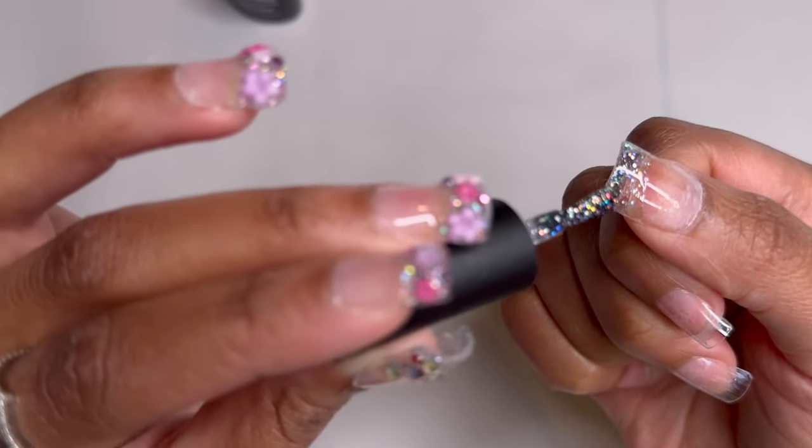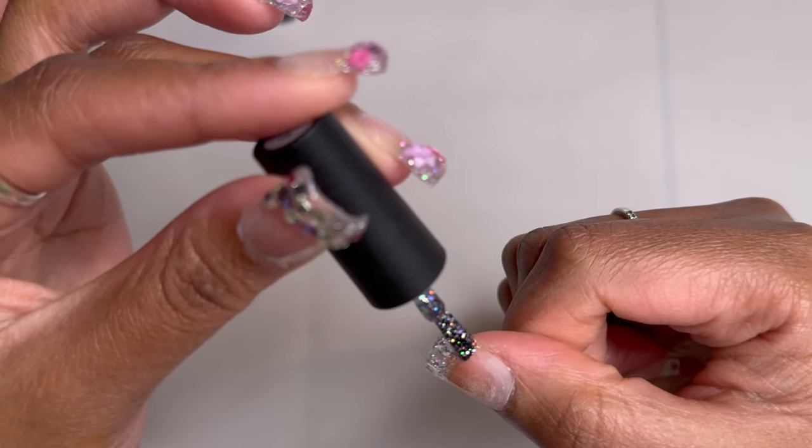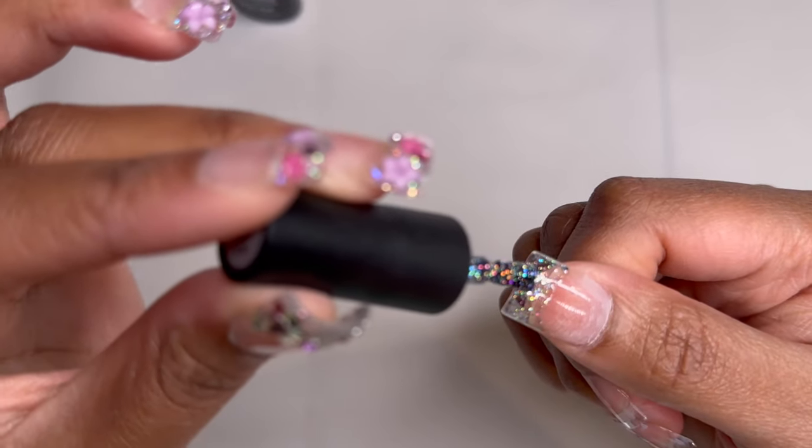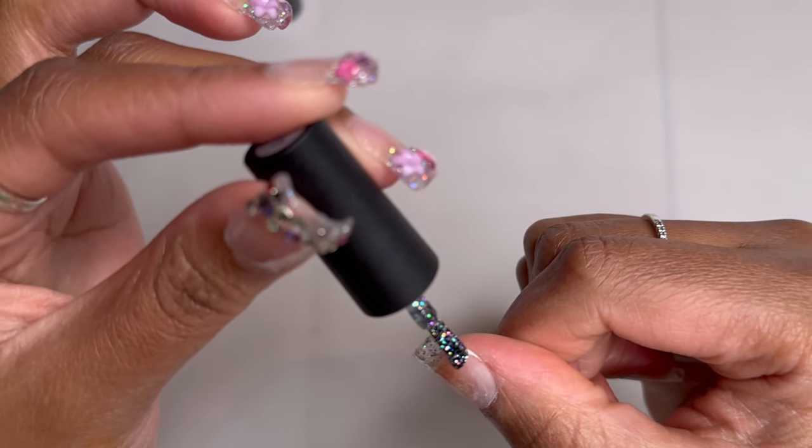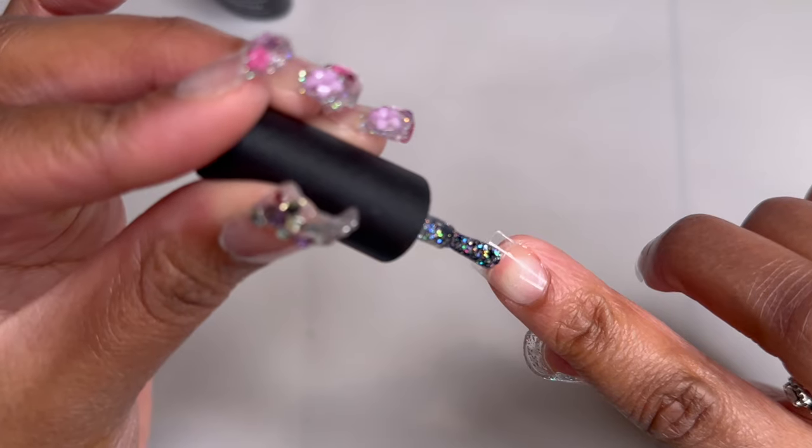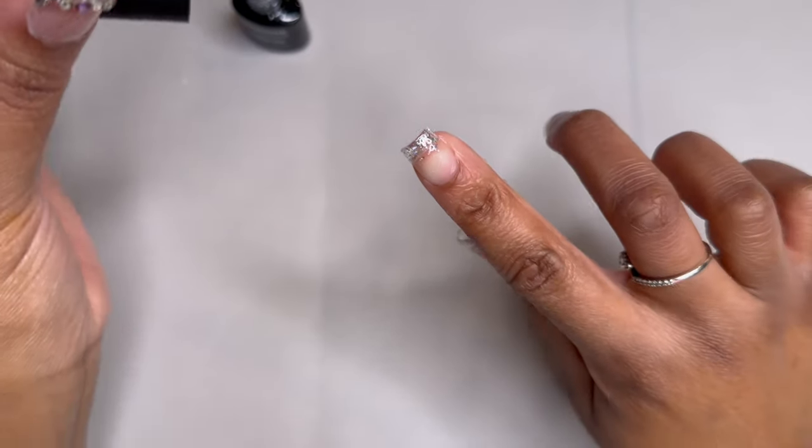I'm only using the brush for this French tip because I want this tutorial to be using the least amount of tools, brushes, and items as possible. And since it is a clear color, we can kind of get away with not having the most perfect French tip, but we still will go in and fix any minor imperfections with a brush and alcohol.